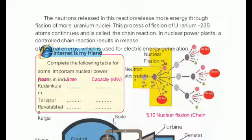As uranium-236 is unstable, it will immediately break down to form two compounds — barium and krypton. Due to this, three neutrons are released and this fission will produce 200 milliequivalent volts of energy.